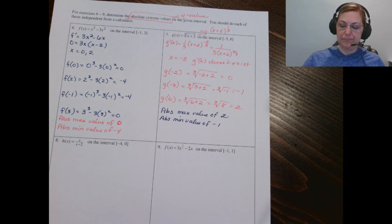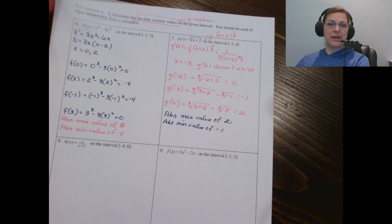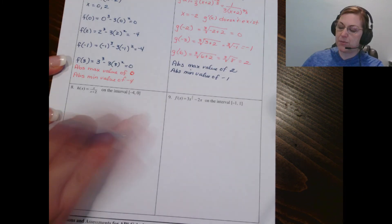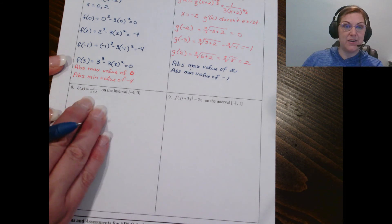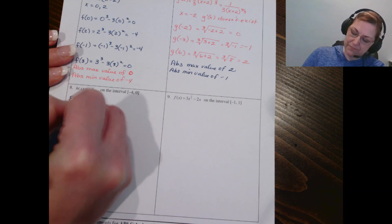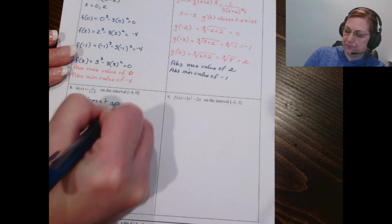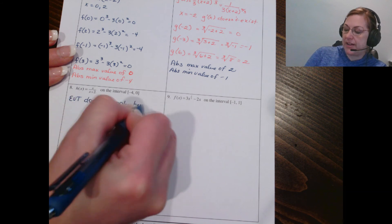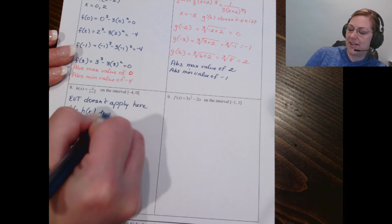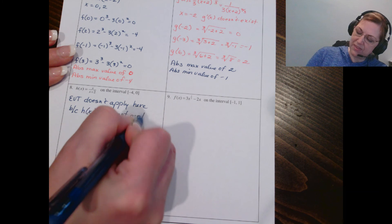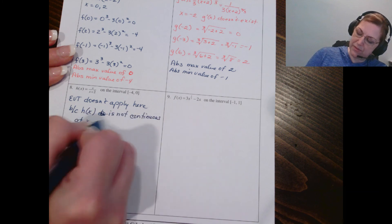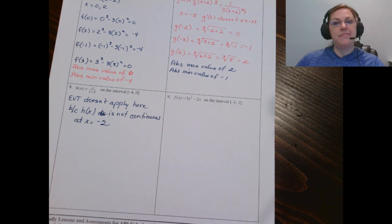Number eight: we have the interval from negative four to zero. We're always leery of fractional functions, so the EVT doesn't apply here because h(x) is not continuous at x equals negative two.